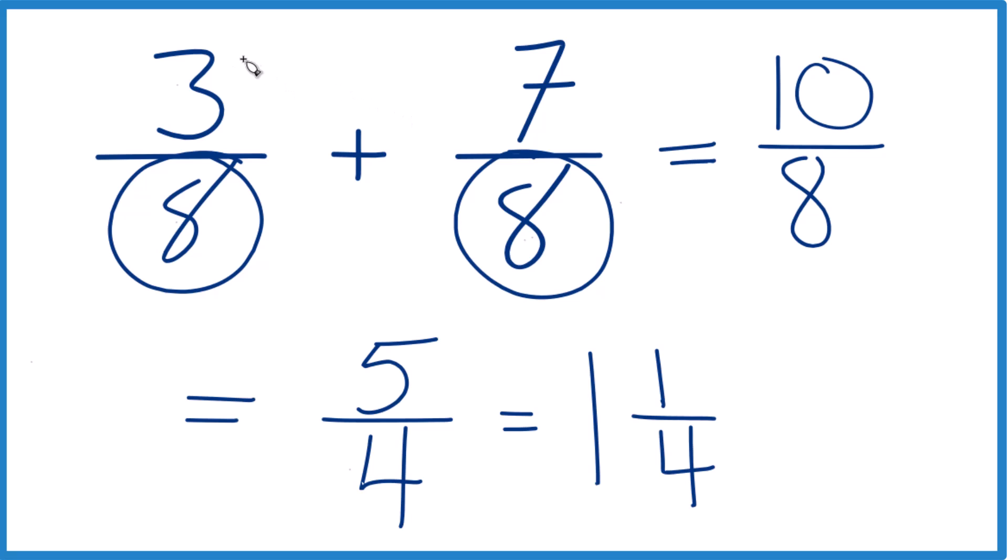So in answer to our question, 3 eighths plus 7 eighths, it equals 10 eighths, or 5 fourths, or as a mixed number, 1 and 1 fourth. This is Dr. B, and thanks for watching.